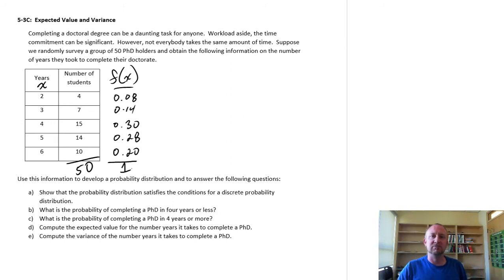So this all adds up to 1. Meaning that if we randomly select somebody, a PhD holder, we can say with 100% certainty, they took between 2 and 6 years, inclusive of 2 and 6 years. So there we have our probability distribution in tabular form. Here we're just developing this part of the problem.